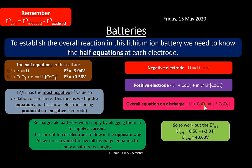Rechargeable batteries work by supplying a current that forces electrons to flow in the opposite direction, reversing the cell reaction. If asked to write the equation for recharging, simply flip the overall discharge equation — the lithium salt is converted back to lithium metal and cobalt oxide.